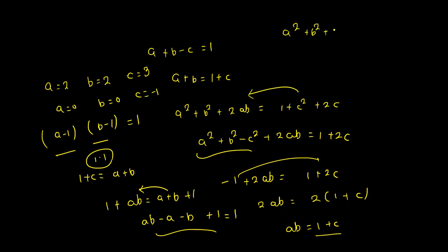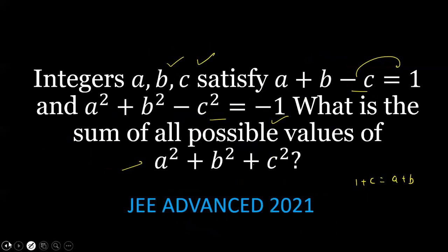For a=2, b=2, c=3, we get a²+b²+c² = 17. For a=0, b=0, c=-1, we get a²+b²+c² = 1. The sum of all possible values is 17 plus 1 equals 18. Thank you.